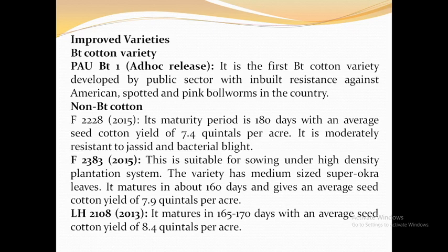Next is the Non-Bt variety F2228. This was released during 2015. Its maturity period is 180 days with an average seed cotton yield of 7.4 quintals per acre. It is moderately resistant to jassid and bacterial blight.